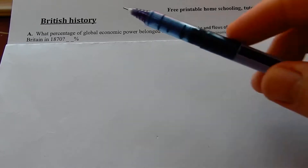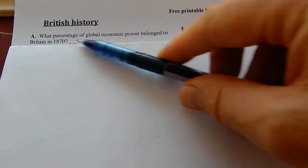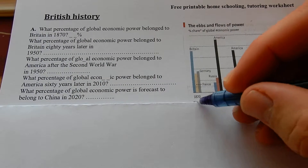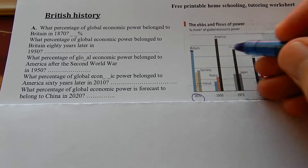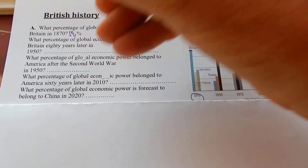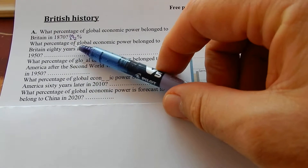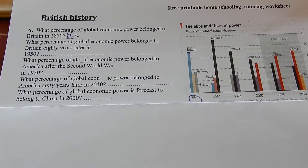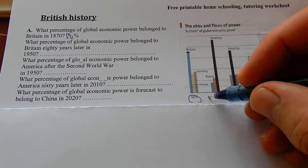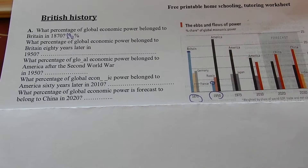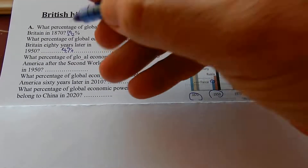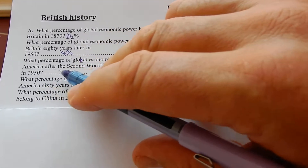British history: what percentage of global economic power belonged to Britain in 1870? About 18% — roughly one-fifth of the world. What percentage of global economic power belonged to Britain 80 years later in 1950, after the Second World War? Britain went way down to 4%.